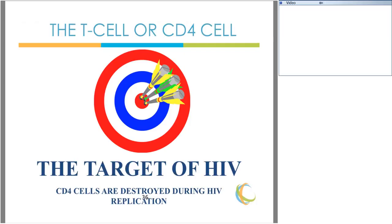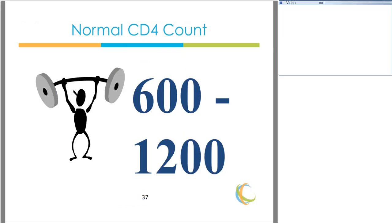The CD4 cell, sometimes called the T cell, is the major target of HIV infection. These CD4 cells are destroyed or damaged during HIV replication. A normal CD4 count in people without HIV is typically 600 to 1,200, though counts can vary very widely from person to person regardless of HIV status. CD4 counts are also affected by other external stressors including other illnesses, stress, disturbance in sleep patterns, and even time of day — so it's important to include this information when counseling around what is a normal CD4 count.